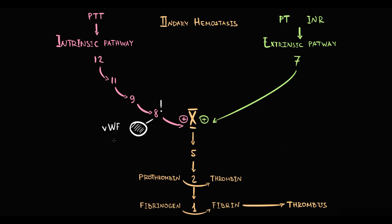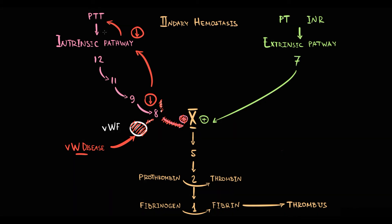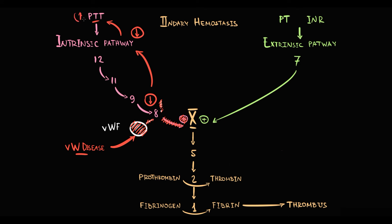In secondary hemostasis, without von Willebrand factor, the level of factor 8 decreases, because von Willebrand factor is required for stabilization of factor 8. A decrease in factor 8 disrupts the intrinsic coagulation pathway, which we assess by PTT. So dysfunction of the intrinsic coagulation pathway will manifest with prolongation of partial thromboplastin time. Importantly, prothrombin time and international normalized ratio will remain normal, because von Willebrand factor and factor 8 do not affect the extrinsic coagulation pathway at all.